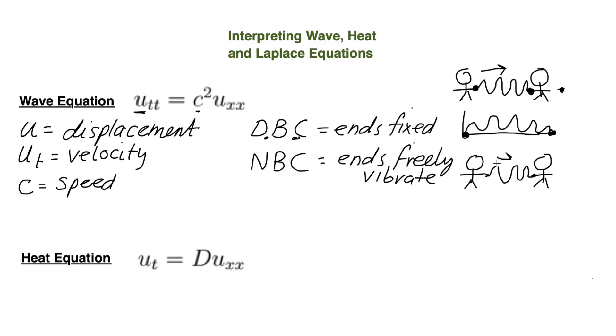Imagine like an impulse is sent through here and this person is really just going to let their hands go really wide. And you'll see quite a difference between the first group here. So the ends are allowed to freely vibrate is the Neumann boundary condition contrasted with the Dirichlet boundary condition where the ends are fixed.